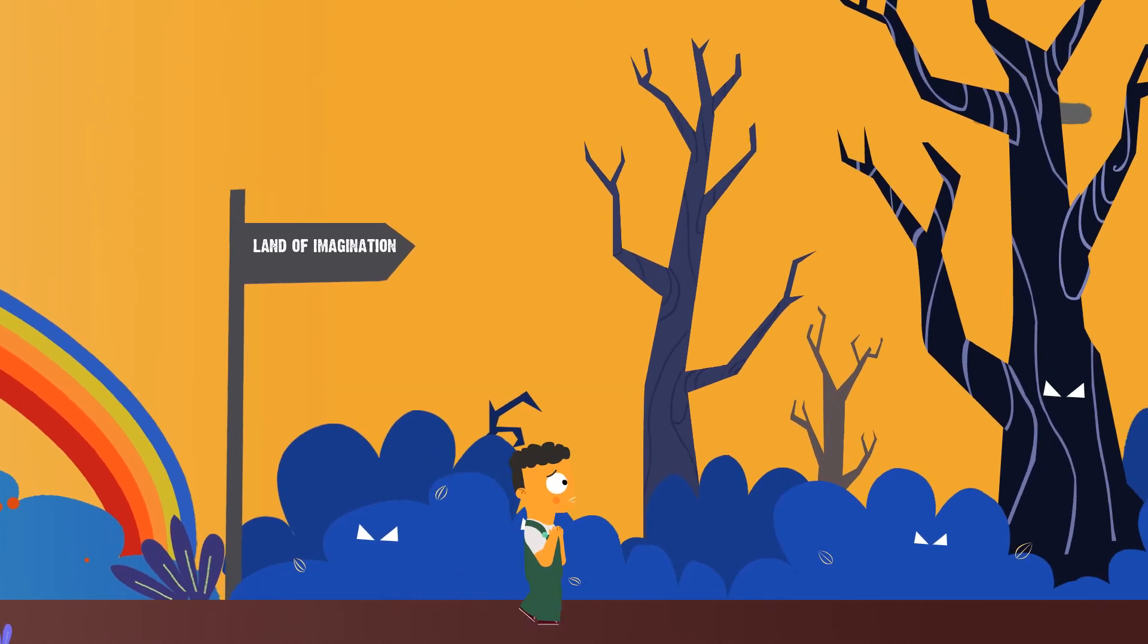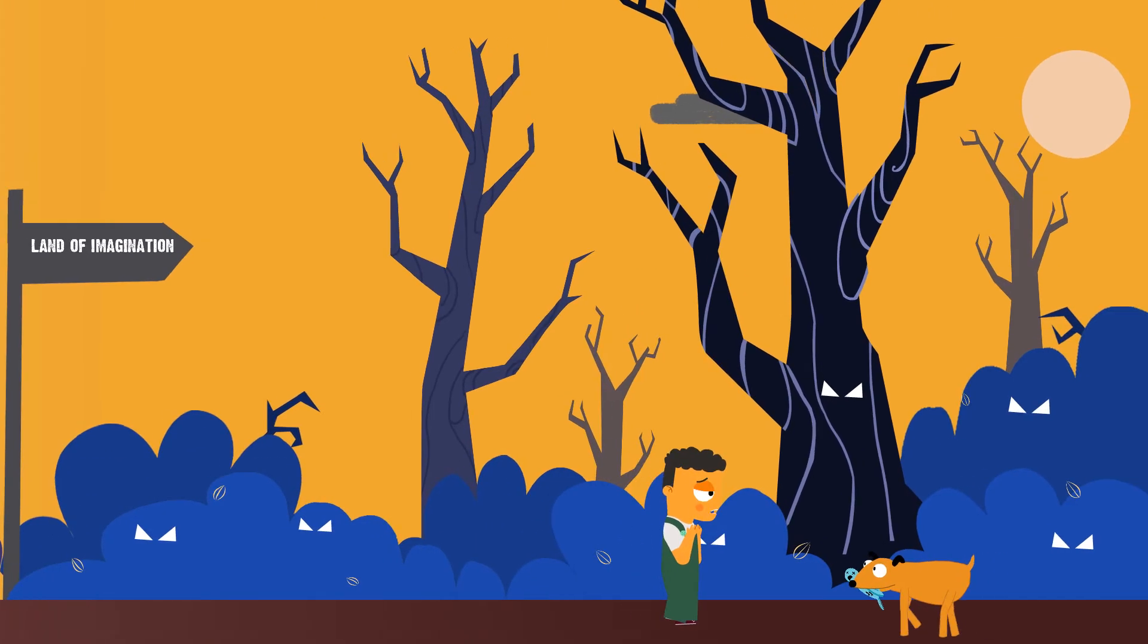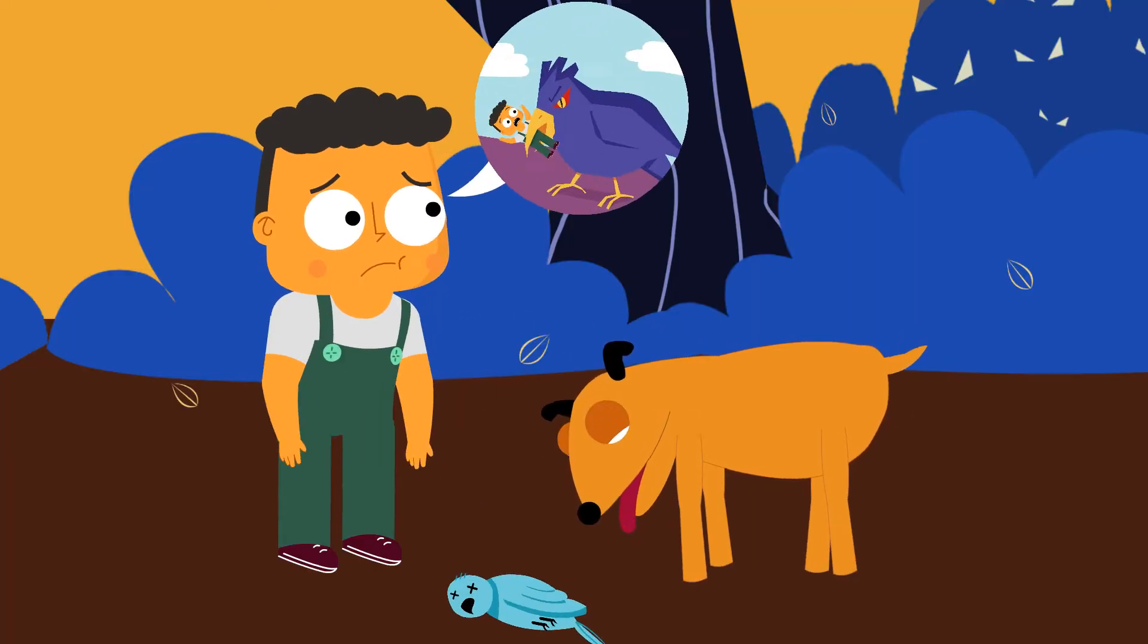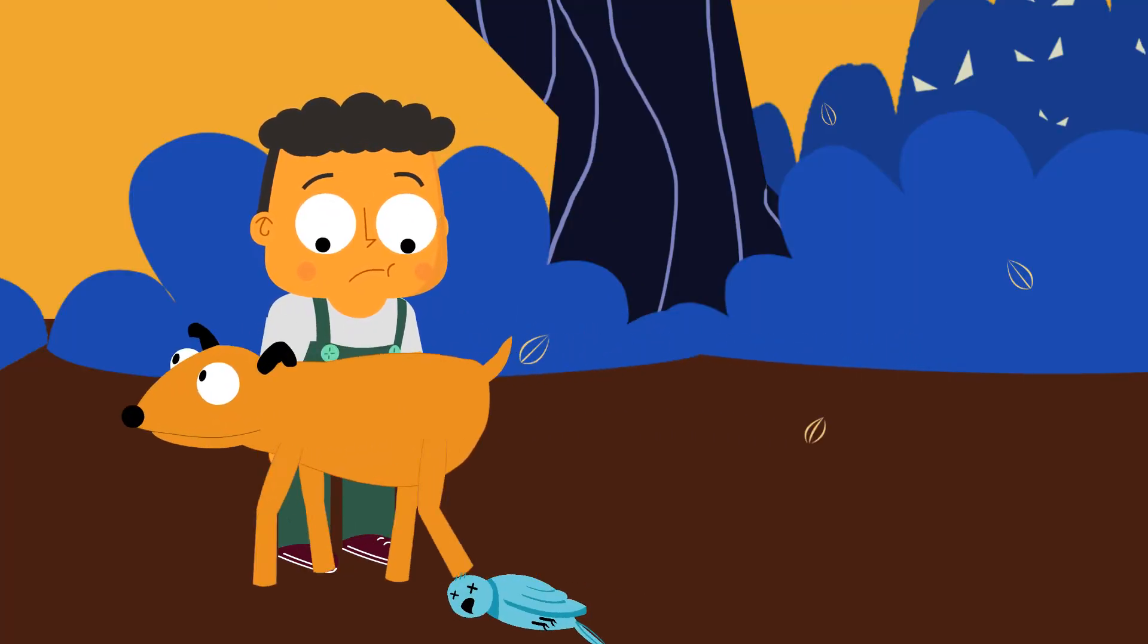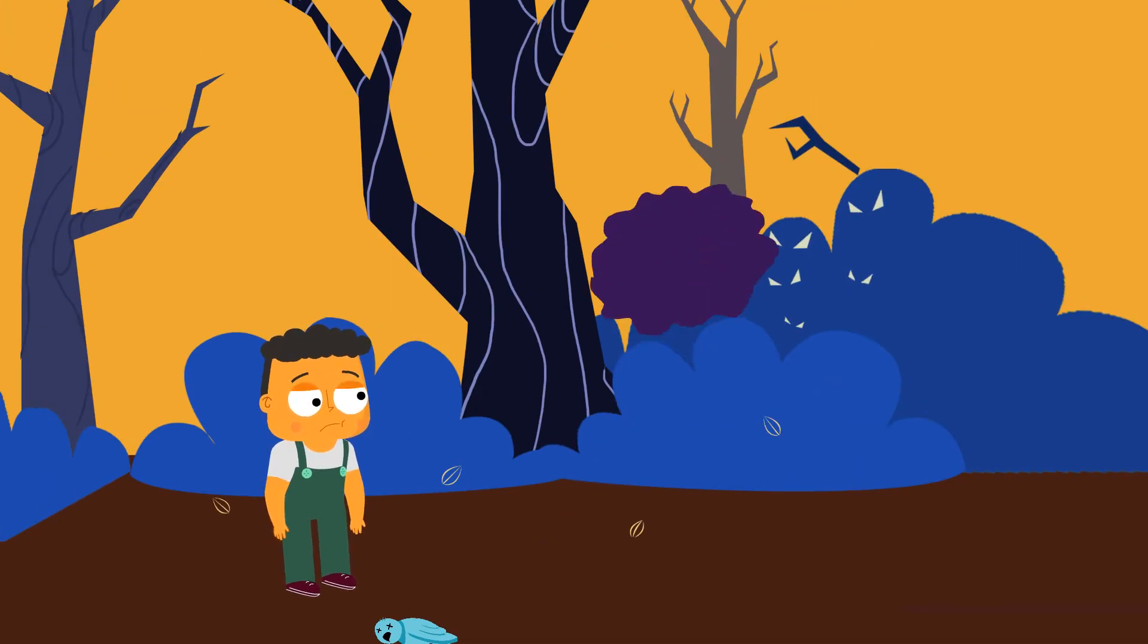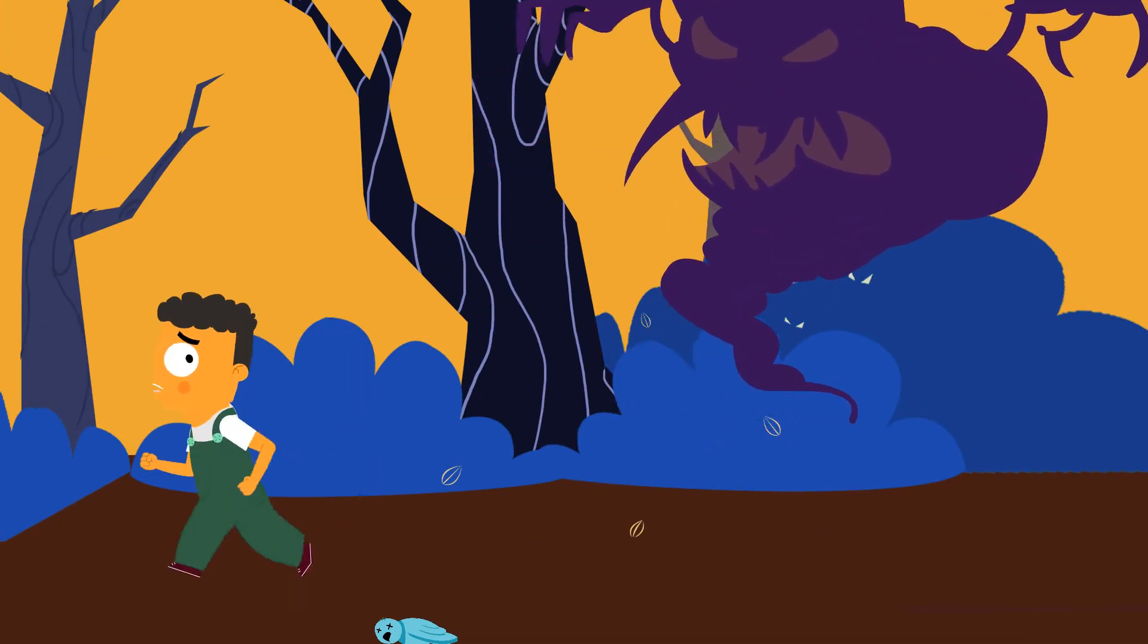By this time, kids may also have had experiences with difficult-to-understand concepts, like death, leaving them trying to make sense of things they have incomplete knowledge of. With this cocktail of factors, the propensity for fear escalates.